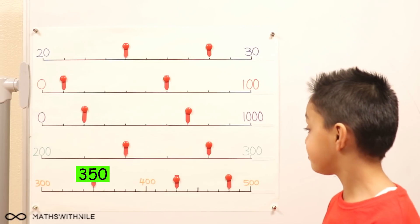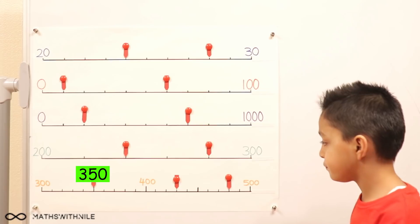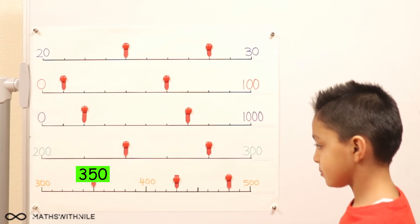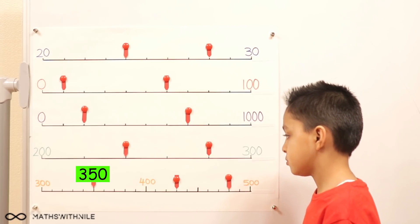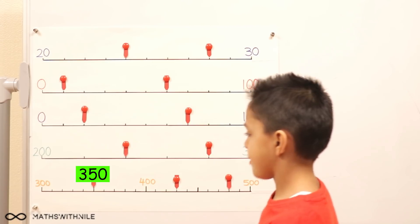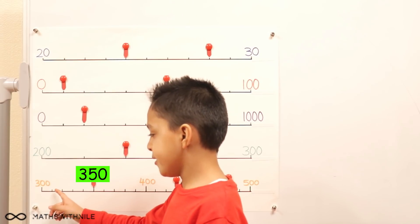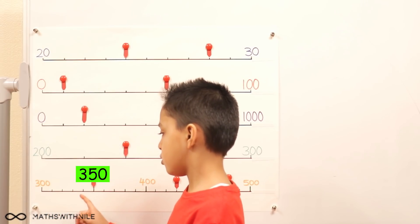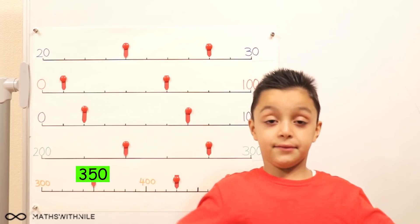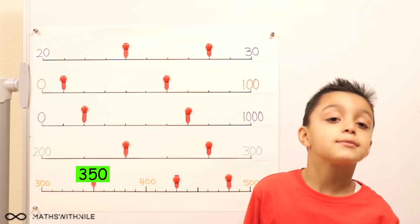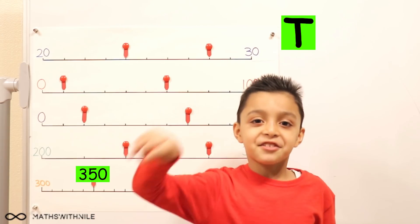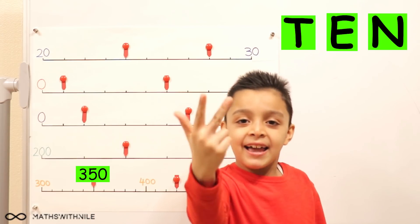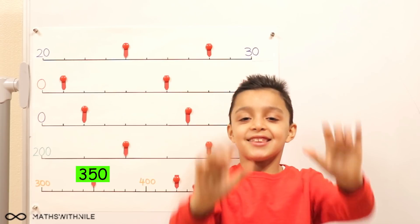So what does that tell you about the value of each space? So between that 300 and 350, how many spaces do you have? One, two, three, four, five. So it's counting up in what? If it has five spaces to go from 300 to 350. Ten. Brilliant.